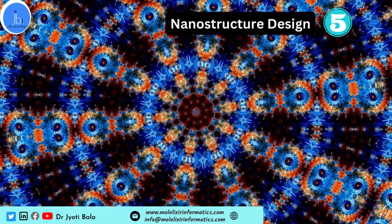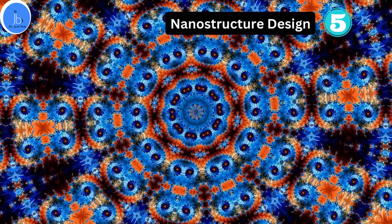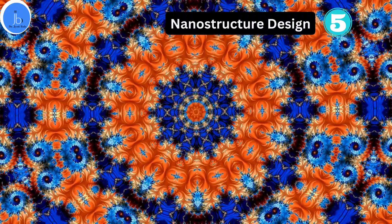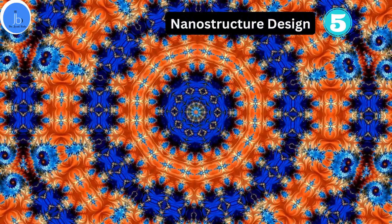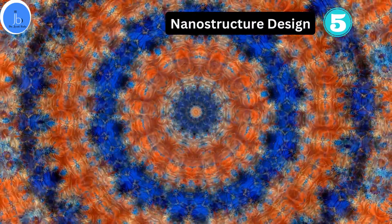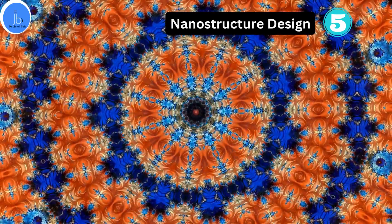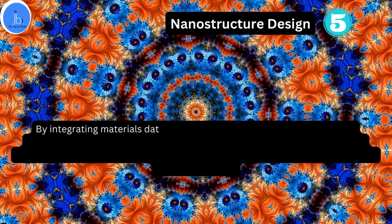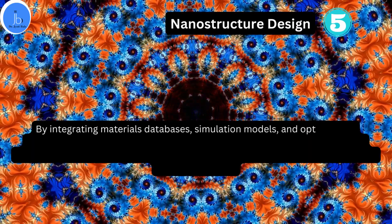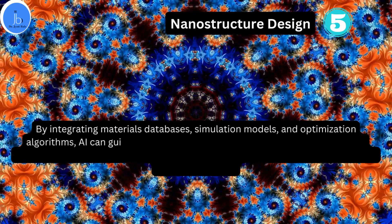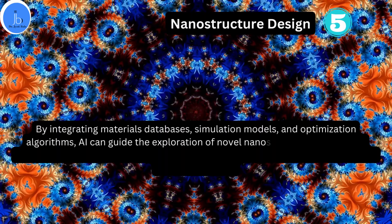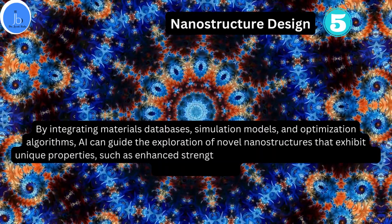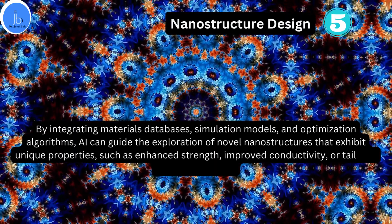Additionally, AI and ML have an impact in nanostructure design. These algorithms can aid in the design of nanostructures with desired properties for specific applications. By integrating materials databases, simulation models, and optimization algorithms, AI can guide the exploration of novel nanostructures that exhibit unique properties such as enhanced strength, improved conductivity, or tailored optical responses.